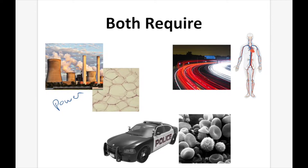Both are going to require a transportation network. For cities it's something like highways and roads; in animals it's going to be things like the circulatory system and the lymphatic system. And lastly, both are going to require some kind of police force. For cities it's the physical police, and for animals it's going to be the immune system, which fights off the invaders — the bad guys that try to infiltrate the body.